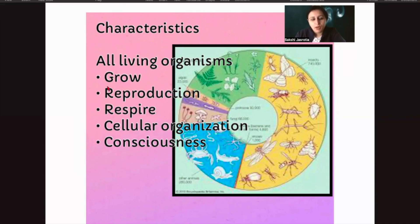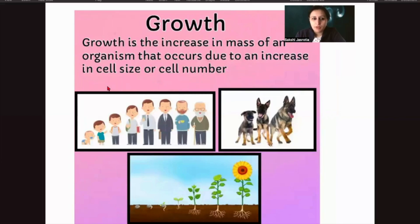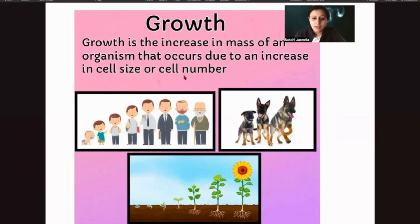First, let's talk about growth. We were like a baby and then we started growing taller and bigger in size. Growth is an increase in the mass of an organism that occurs due to increase in cell size and cell number. As organisms grow, more and more cells are produced inside the body, their numbers increase, and there is bone elongation in the case of animals. Growth is seen in plants as well, not only in animals.